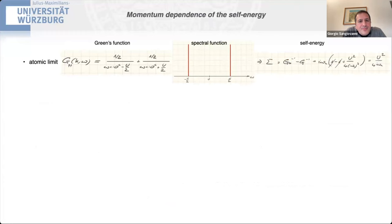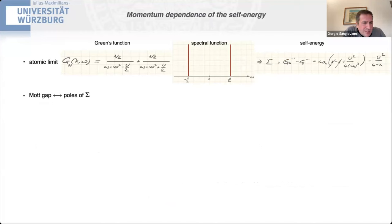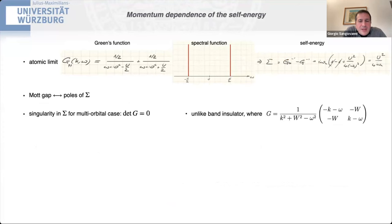A back-of-the-envelope Green's function calculation for the atomic limit shows that you have a spectral function made of two poles, and the associated self-energy has to diverge as one over omega. The Mott gap is associated with poles of the self-energy — differently from band insulators, which have no self-energy and therefore no zero of the determinant of the Green's function. I'm going to show determinants of the Green's function as a good way of revealing poles of the self-energy.